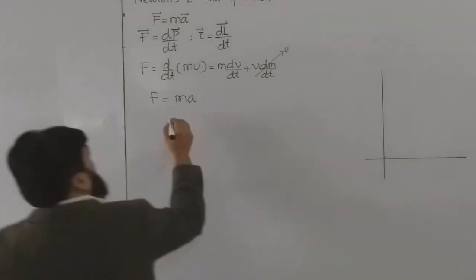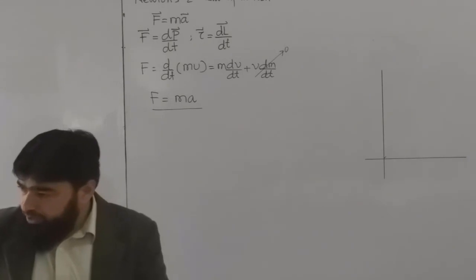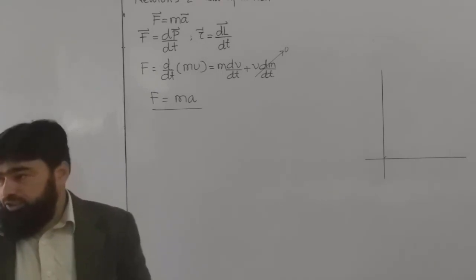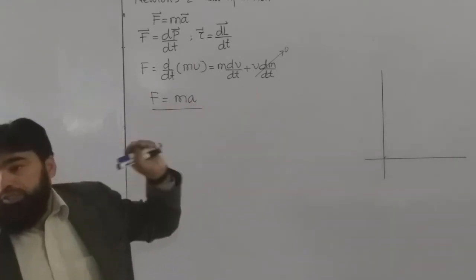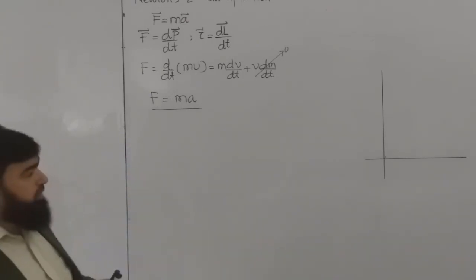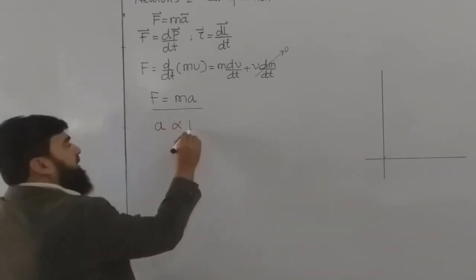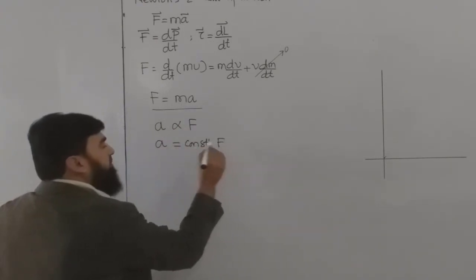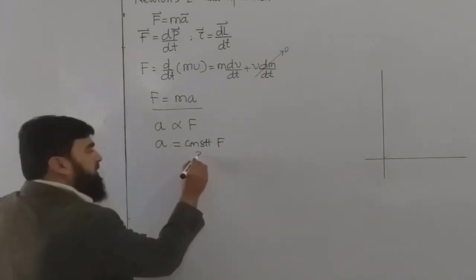Force is independent and acceleration is dependent. We give force and acceleration is produced. We will discuss this thing a little bit more when we will discuss here that what are the very common misconceptions about this law. But for the moment, I know that the dependent is A while the independent is F. So A is equal to some constant times F. What should be this constant? Again, it is a question. What should be this constant?